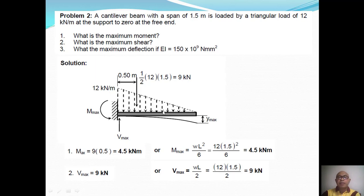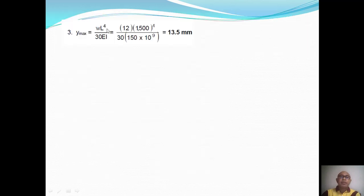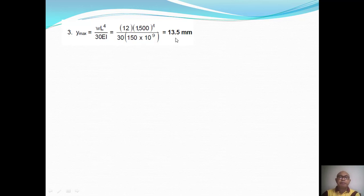Substituting into δ_max = wL⁴ / 30EI: w = 12 kN/m (converted to N/mm), L = 1.5 m converted to millimeters, and EI = 150 × 10⁹ N·mm². The maximum deflection is equal to 13.5 mm.